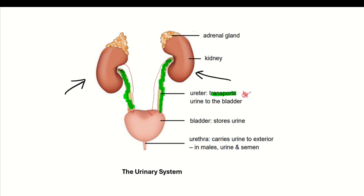The bladder stores the urine temporarily before you go to the toilet. When you need to go to the toilet, the urine in the bladder leaves through the urethra. Please do not confuse the ureters and the urethra. The ureters transport urine from the kidneys to the bladder, whereas the urethra transports urine from the bladder to the outside environment.